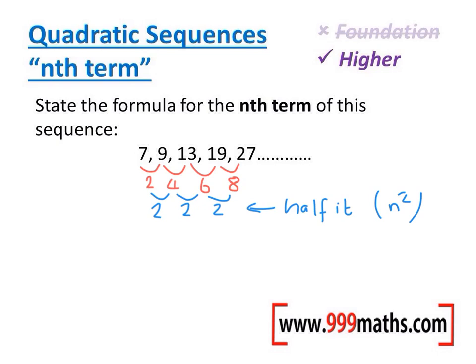It's really important that you do the next two steps in the correct order. What you need to do first of all is write out your original sequence. Now our original sequence was 7, 9, 13, 19 and 27. What we do then is we write out the n squared sequence, because that's what we've just worked out in the previous part of the question.